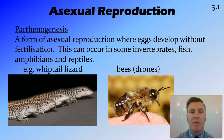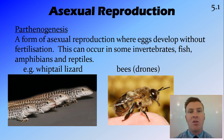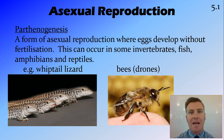When the queen bee lays eggs, if those eggs are fertilized they become worker bees, but if they're not fertilized they become drones. This unfertilized development is that asexual reproduction known as parthenogenesis.